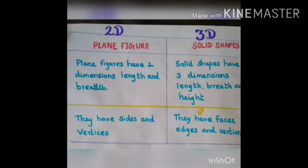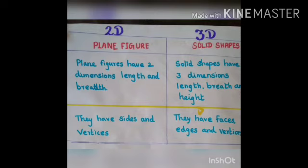Finally, the difference between 2D and 3D shapes: 2D shapes are plain figures with two dimensions — length and width. 3D shapes have three dimensions — length, width, and height. 2D shapes have sides and vertex, while 3D shapes have faces, edges, and vertex. I know you all understand the difference between 2D and 3D shapes. Thank you children — we will meet in the next class.